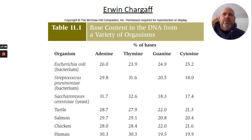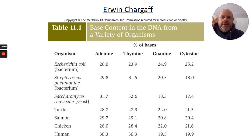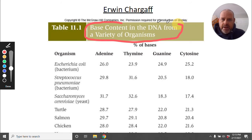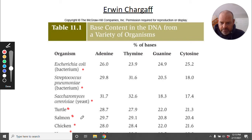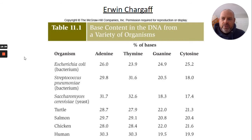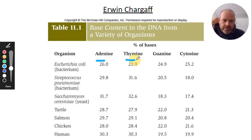The next question was: we know it's DNA — what is DNA made of? Erwin Chargaff decided to look at the contents of DNA across a variety of organisms: bacteria, yeast, turtle, salmon, chicken, and humans. He looked at the percent of bases — adenine, thymine, guanine, and cytosine — in the DNA of each organism.